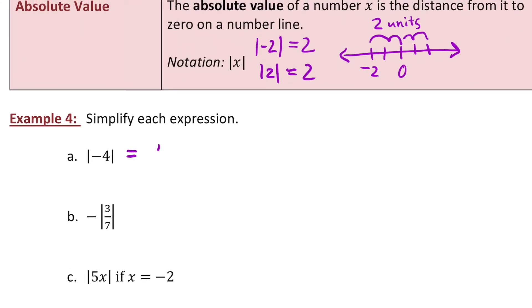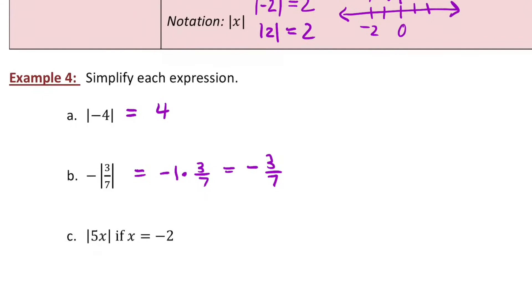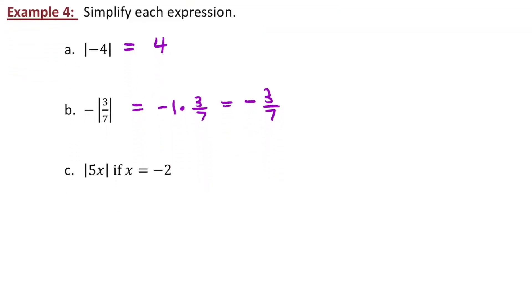So if I'm going to simplify the absolute value of negative 4, that's 4 because that number is 4 units away from 0. If you're working on B, absolute value is a grouping symbol. So I would first take my absolute value of 3 7ths, which is just positive 3 7ths, and then multiply by my negative 1 to get negative 3 7ths. Quick note, the distributive property does not apply to absolute value. You cannot multiply a negative value into absolute value. You must simplify inside first.